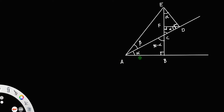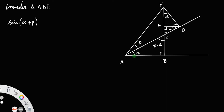Now consider triangle A, B, E. What is the value of sine angle A? Sine angle A can also be written as sine of alpha plus beta, since the whole angle A is the sum of these two angles alpha plus beta. So what is sine of alpha plus beta? Sine is opposite side, that is EB, divided by hypotenuse AB.